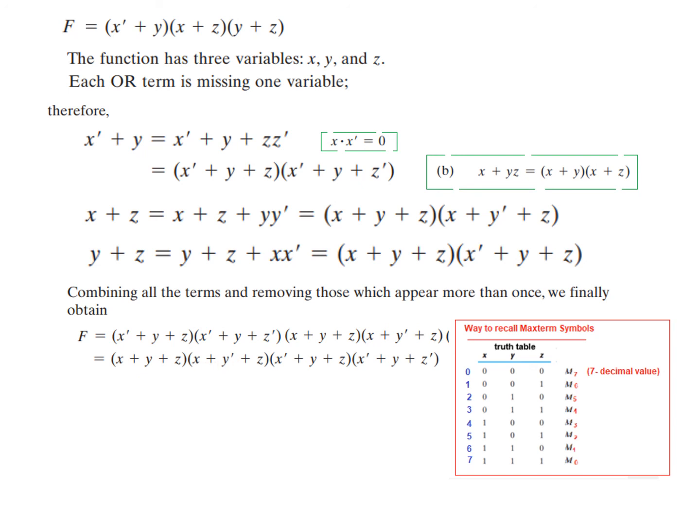Look at this. This is 101. That means five. So seven minus five is two. So this will be two here. Same way we can write all the other values. So this is seven. This is five. This is three. This is two.